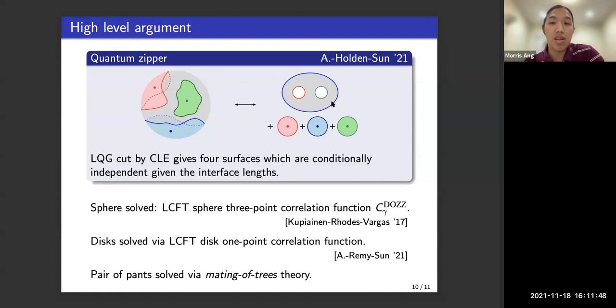And finally, this pair of pants topology surfaces can be understood by something called the mating of trees. So in this picture, on the left-hand side, we have an LQG sphere, and we have a CLE. On the right-hand side, we have a bunch of LQG surfaces, and the point is that all of these surfaces here can be understood using LCFT and other methods. So by combining this information, we can understand the CLE very well, which gives us our main theorem.